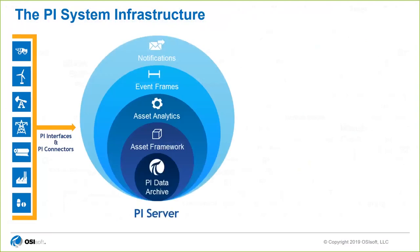All of these people need and want to utilize data. We collect all that data and send it to what we call the PI Server — this is all the real-time data — and then we add layers on top of that data so that it's actually meaningful to the people who use it.